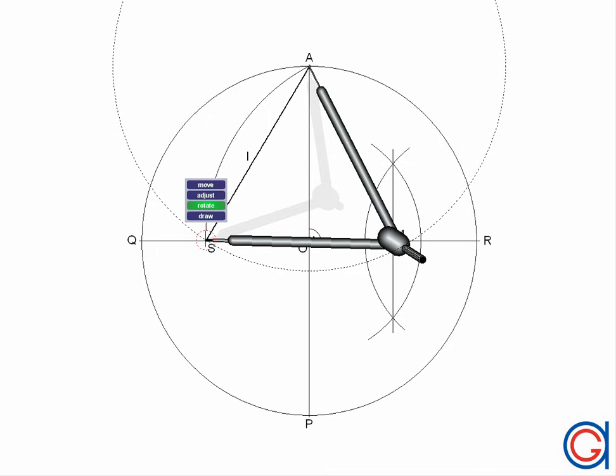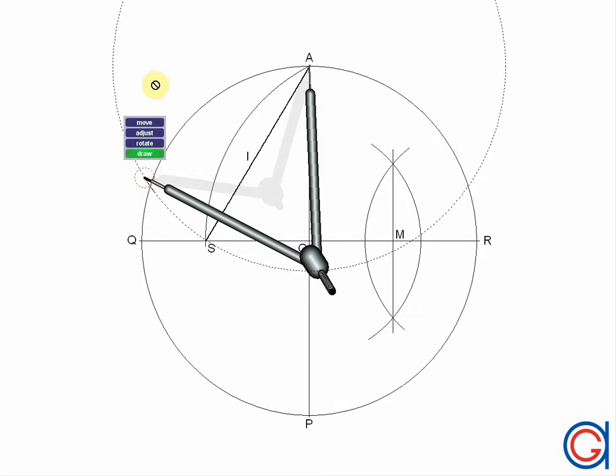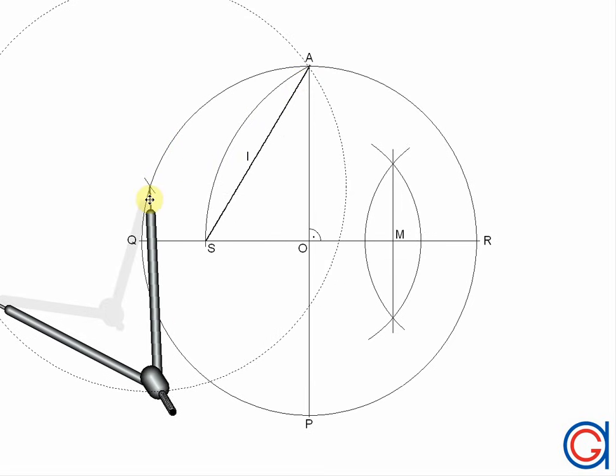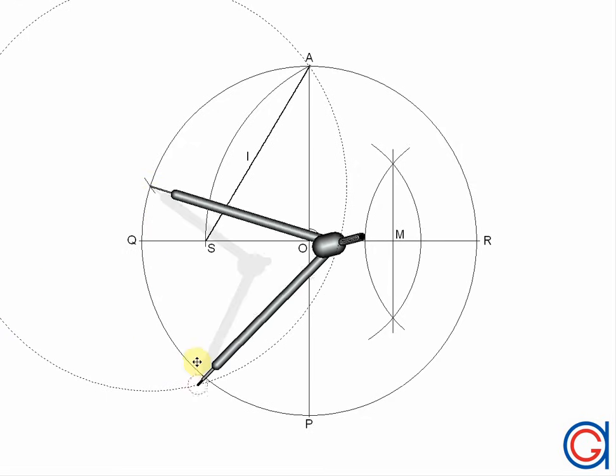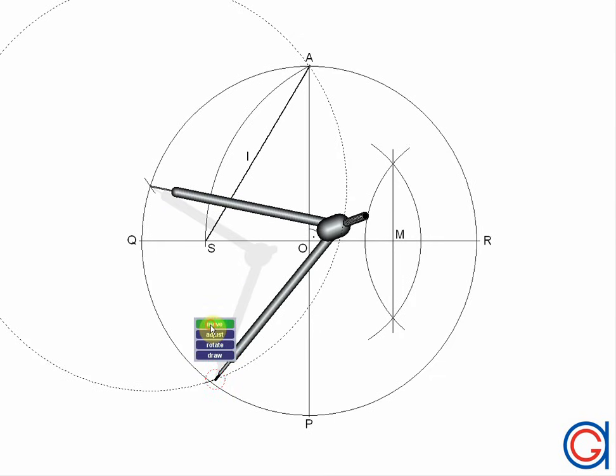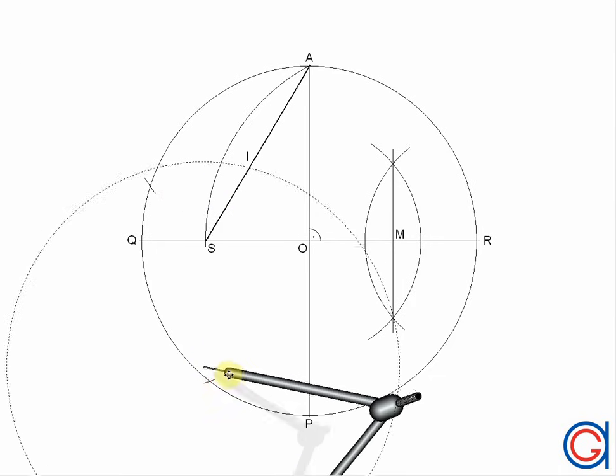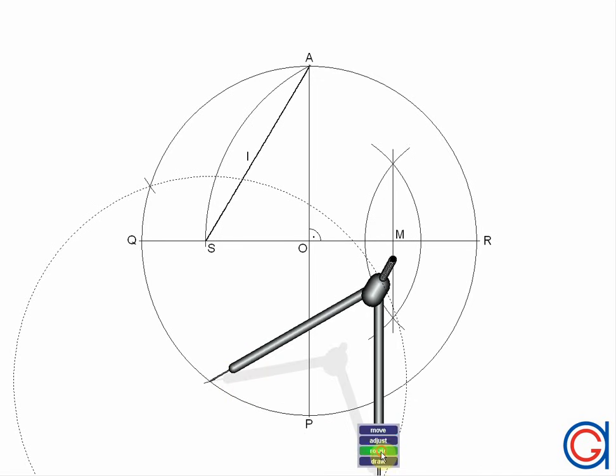The next step is with our compass we want to transport our length L onto our circumference five times starting at point A. So as you can see we scribe our first point. Now setting our compass on this point, we scribe our second point. Again following this process we set our compass on our third point and we scribe our fourth point.